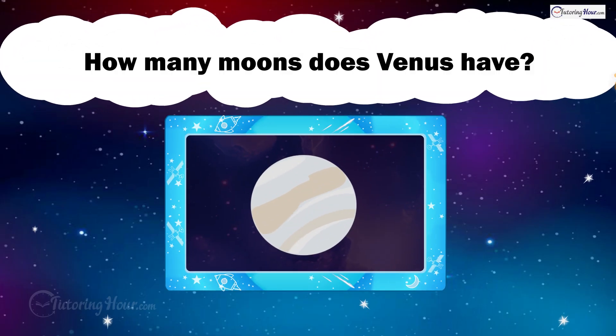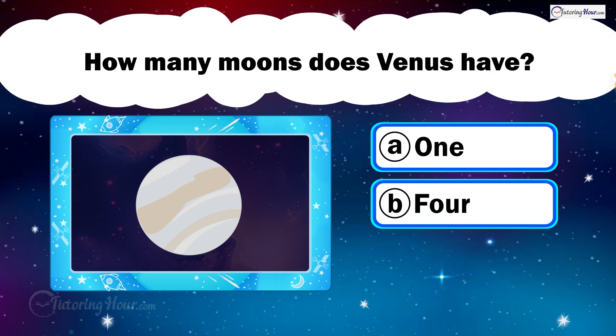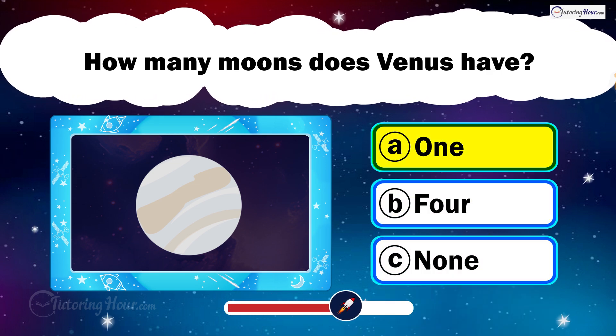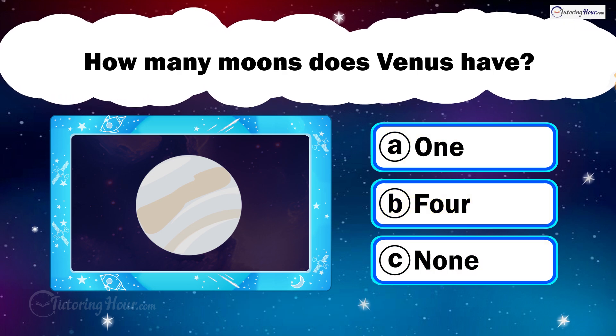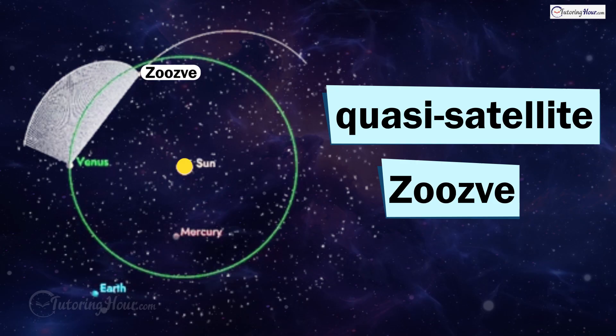How many moons does Venus have? Is it A. 1, B. 4, or C. None? Venus, like Mercury, has no moons. However, it does have a quasi-satellite named Zuzve.